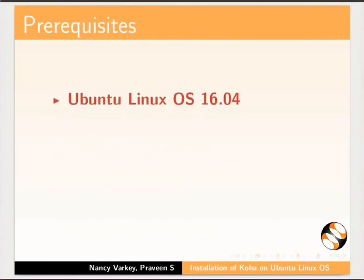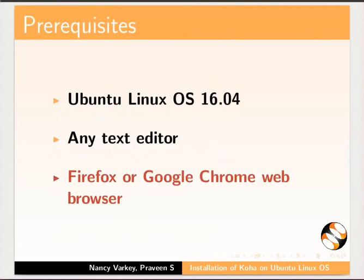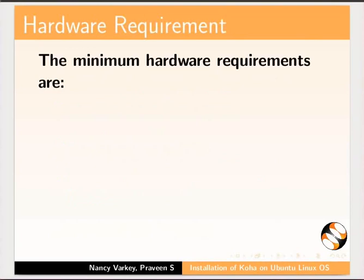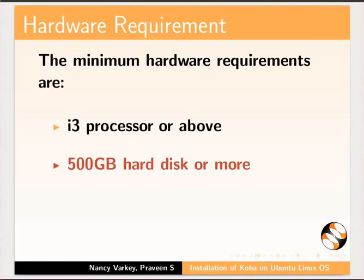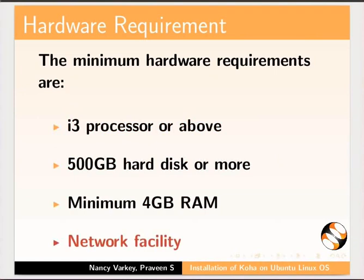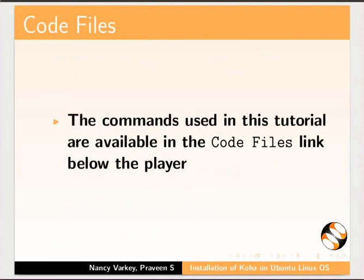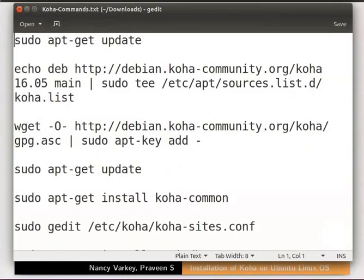Before you start, please ensure that your machine has Ubuntu Linux OS 16.04, any text editor, and either Firefox or Google Chrome web browser. The minimum hardware requirements are i3 processor or above, 500 GB hard disk or more, minimum 4 GB RAM, and network facility. The commands used in this tutorial are available in the code files link below the player. I have opened this file in gedit text editor and will use it to copy-paste the commands during the demonstration.